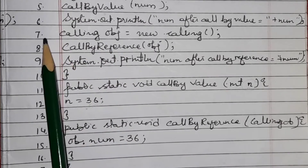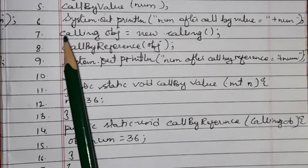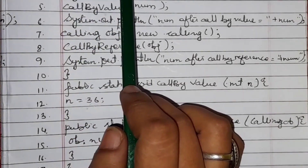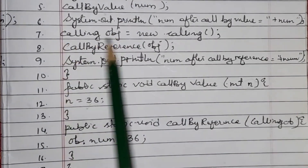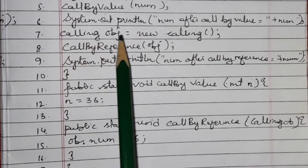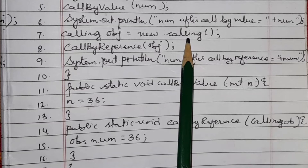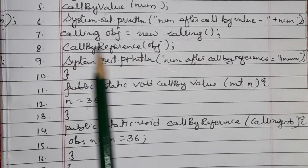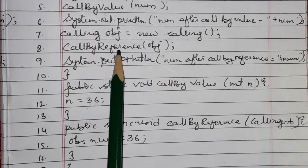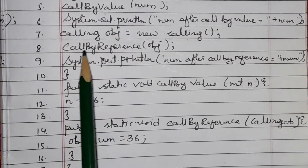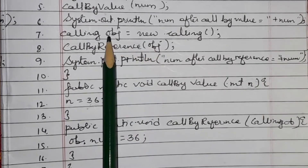Now look at line number 7: 'Calling obj = new Calling()'. We have created an object inside the class 'Calling'. This is the syntax for making an object inside a class. Then we are calling another function, 'callByReference', passing 'obj'. You can write another name — I used 'callByReference' for clarity.